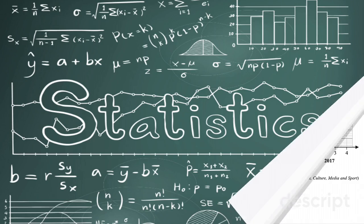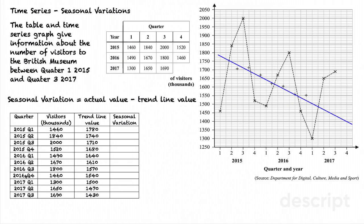Hello. In this video we will look at time series and the seasonal variation. The table and time series graph give information about the number of visitors to the British Museum between quarter one 2015 and quarter three 2017.